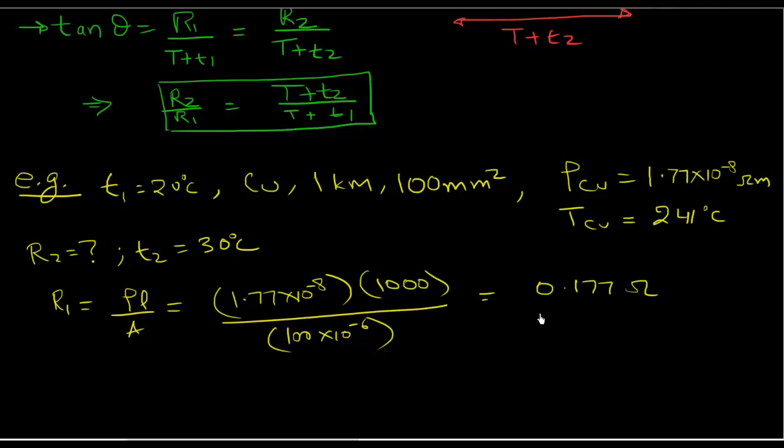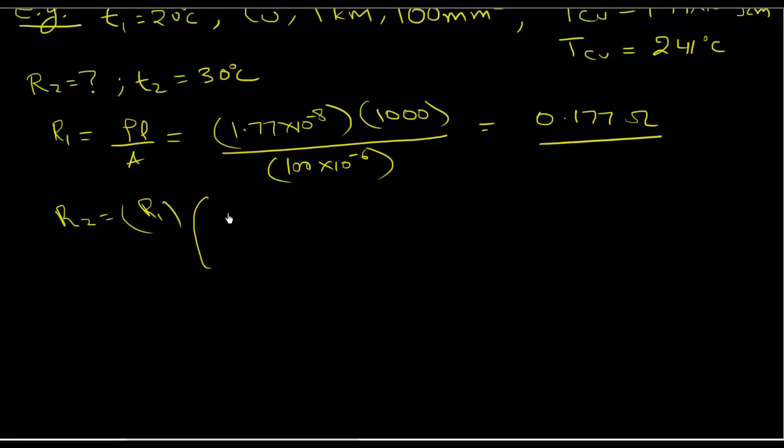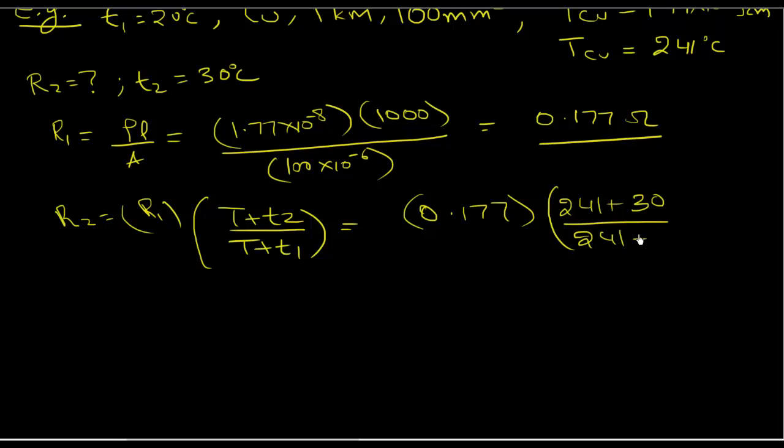So that's my R1. My R2 then is simply going to be R1 times, let me write this a little bit properly. R1 times T plus T2 over T plus T1. So that will be 0.177 times 241 plus 30 over 241 plus 20. And I believe if you put those values in your calculator, you're going to get a value of 0.1837 ohms.